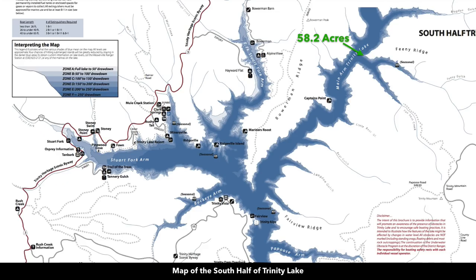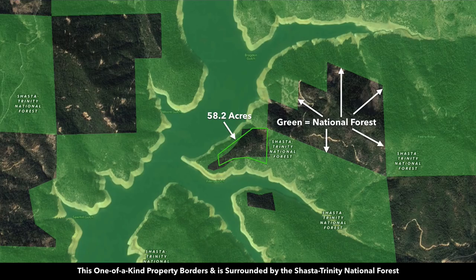So this is Trinity Lake. There are 17,280 surface acres on Trinity Lake, 19 miles in length, 145 miles of shoreline, and the maximum depth is 416 feet. Our 58.2-acre peninsula is located right here. This property borders and is surrounded by the Shasta-Trinity National Forest, the largest national forest in California, containing more than 2.2 million acres.